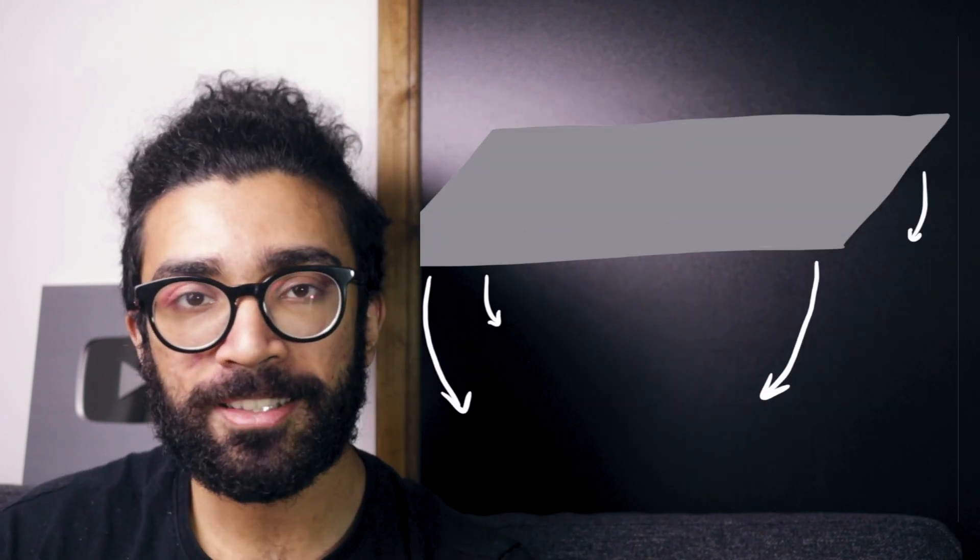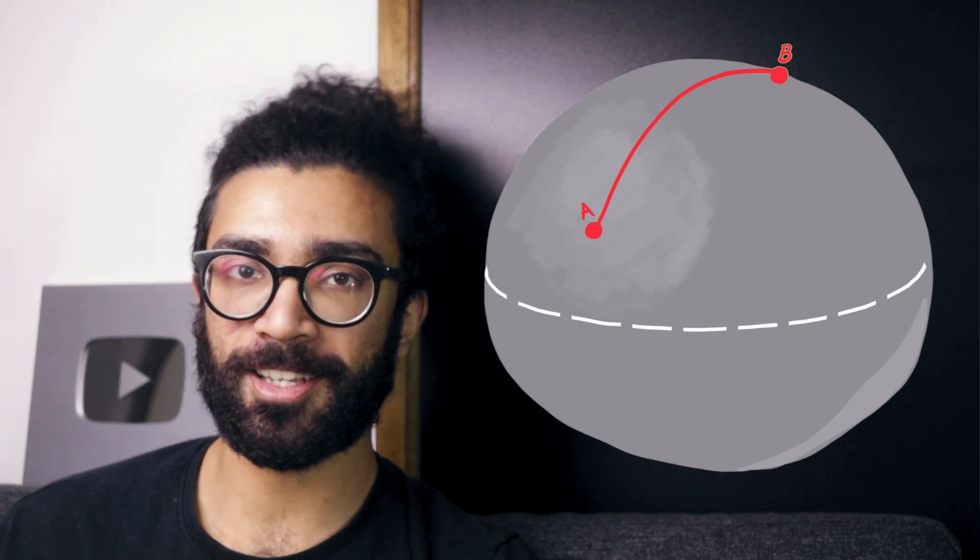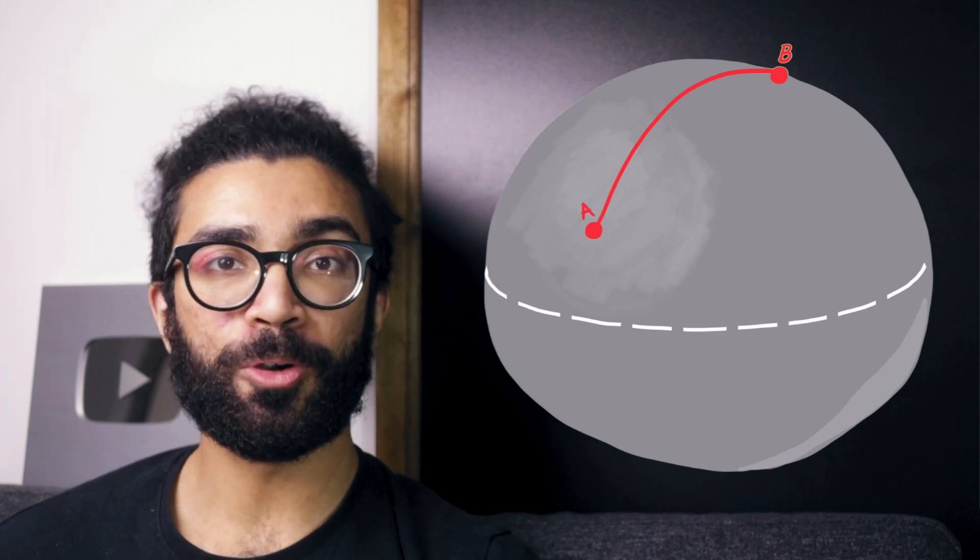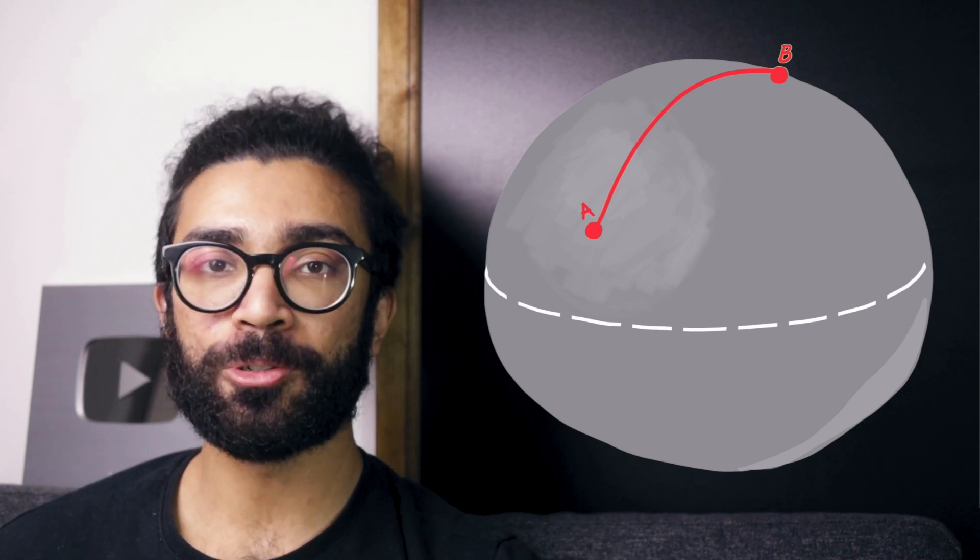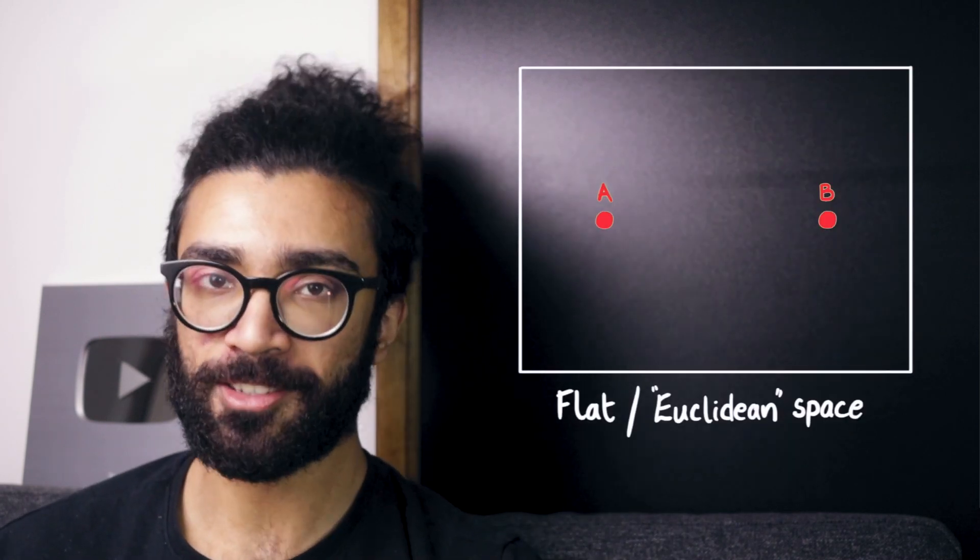To clarify, this is a two-dimensional surface that is warped into the shape of a sphere, and so it only makes sense to go along this surface. And so the shortest distance between two points on our surface need not be a straight line. That is only true in flat or Euclidean space.